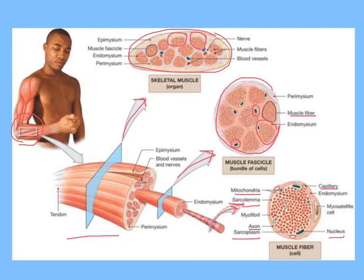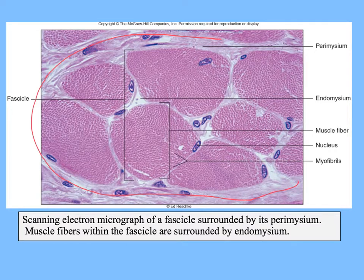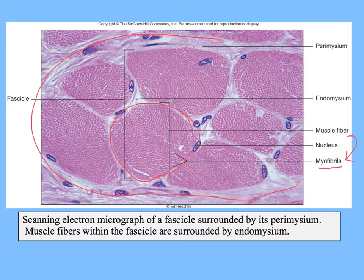Here is an actual scanning electron microscope picture of the same structures. We're doing a close-up of a fascicle, with the perimysium around the outside. Inside are individual muscle cells or muscle fibers, and inside the muscle fiber are myofibrils — individual protein filaments that are involved in the actual contraction, which we'll cover in the next video.